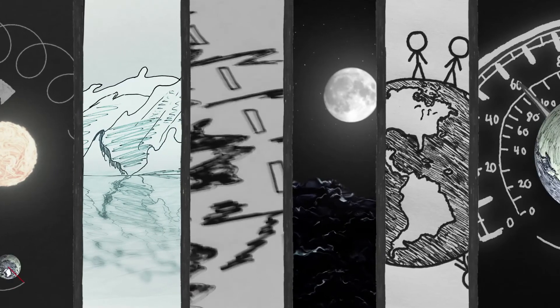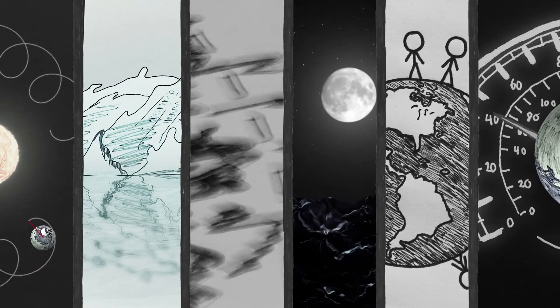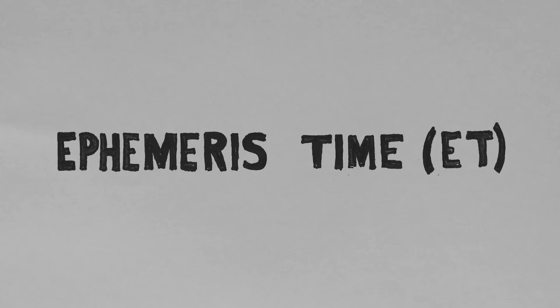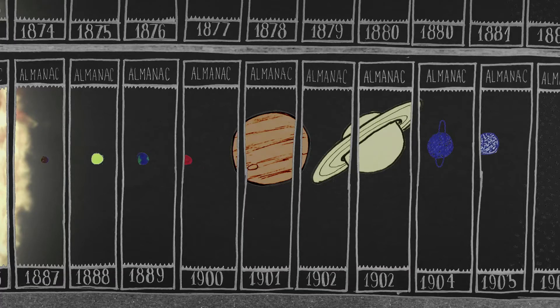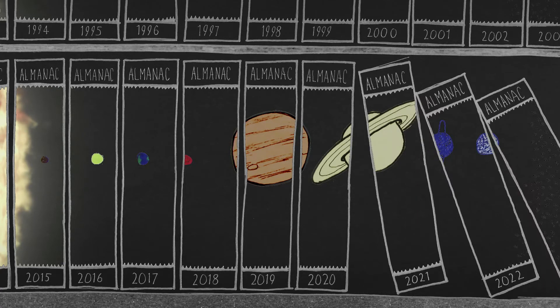Also, the Earth's spin is slowing down. Ephemeris time was the first dynamic timescale in history. These were annual almanacs with predictions of celestial bodies' orbital positions. Today, these estimations serve as backup solutions to GPS data.